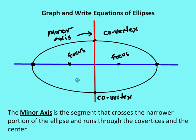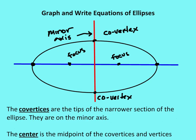The minor axis is the segment that crosses the narrow portion of the ellipse and runs through the co-vertices and the center. Here is the minor axis in red; the major axis is in blue. Remember the foci are not on the minor axis. Co-vertices are at the tips of the narrow section of the ellipse — they are on the minor axis. And again, the center is the midpoint of the co-vertices and the vertices.